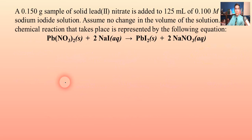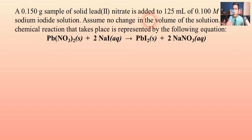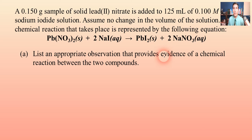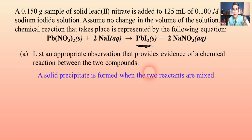Let's try one more example — a multi-part AP-style problem. A 0.15 gram sample of solid lead(II) nitrate is added to 125 milliliters of 0.1 molar sodium iodide solution. Assume no change in volume when adding solid to solution. A chemical reaction takes place represented by the balanced equation given. Part A: list an appropriate observation providing evidence of a chemical reaction. You should see a solid precipitate form — lead(II) iodide, which is a yellow precipitate. That solid precipitate forms when the two reactants are mixed.